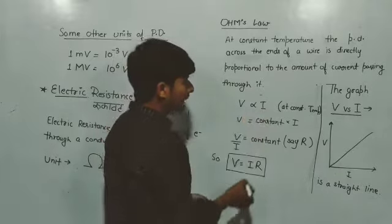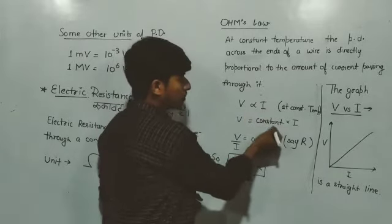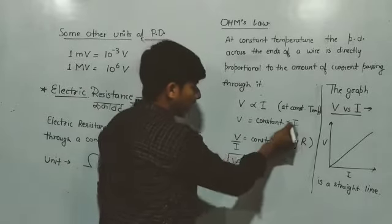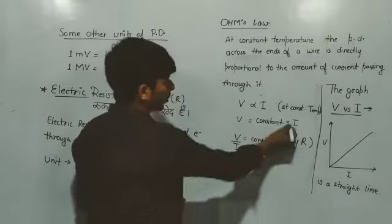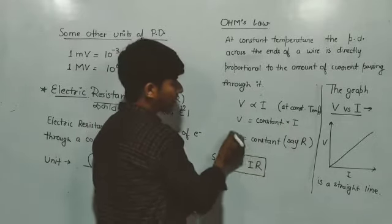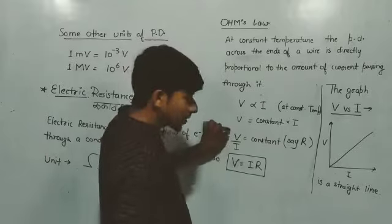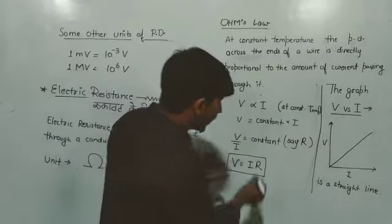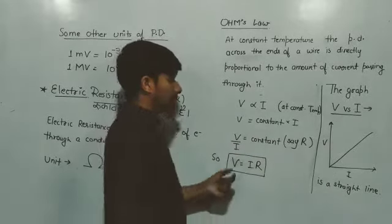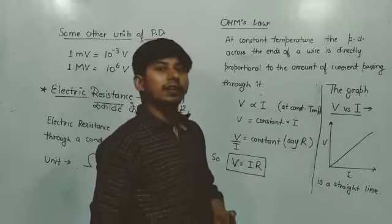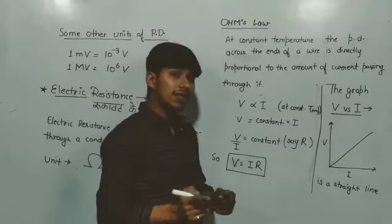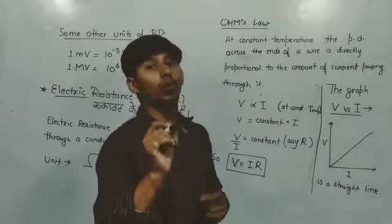So V is equal to constant into I. When I move this I to the other side into the denominator, so V upon I becomes constant. V upon I is equal to constant means the ratio of V and I is always constant. This constant is named as R, which is actually resistance. So resistance is a constant quantity.